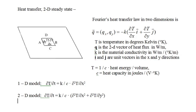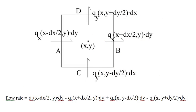The X component of Q is minus K times the partial derivative of temperature with respect to X, and the Y component is minus K times the partial derivative of temperature with respect to Y. As in the 1D case, temperature is proportional to heat energy per unit volume, and the proportionality constant is 1 over C, where C is the heat capacity of the material in joules per unit volume per degree K. Recall the 1D model for heat transfer: the partial derivative of temperature with respect to time equals K over C times the second partial derivative of temperature with respect to X.